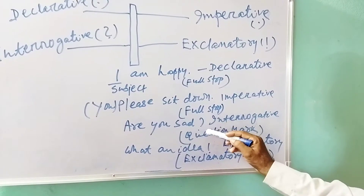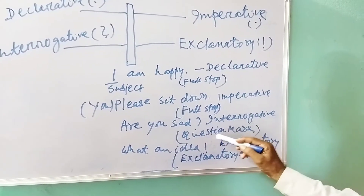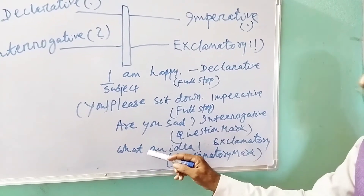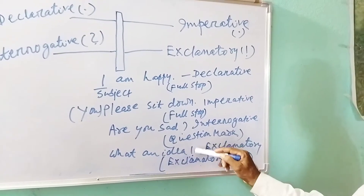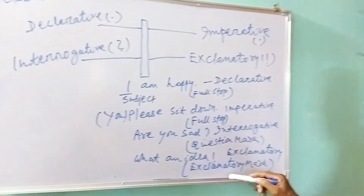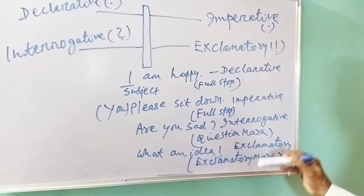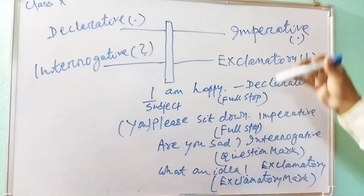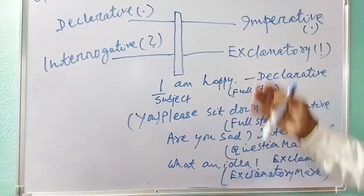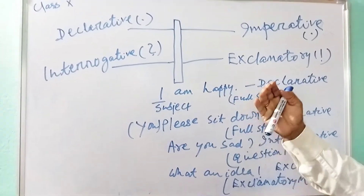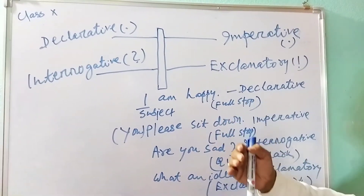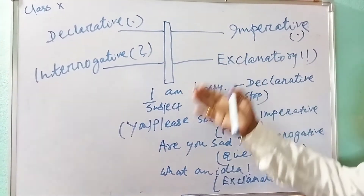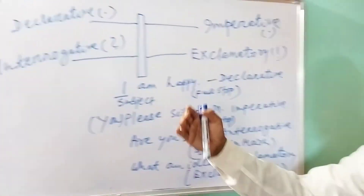'Are you sad?' — very simple to remember. If it ends with a question mark, that is interrogative. 'What an idea!' — ends with an exclamatory mark, also very simple. You just write them down and it will help you remember a lot of things.